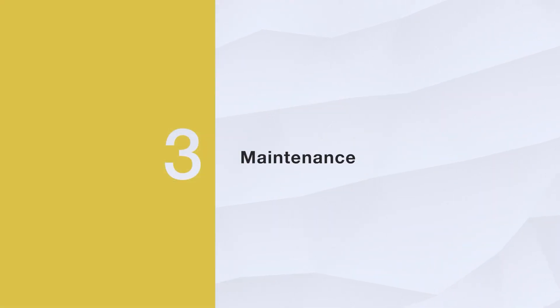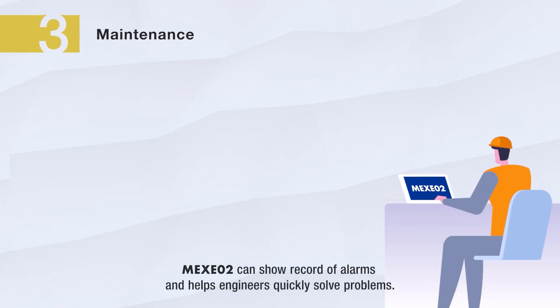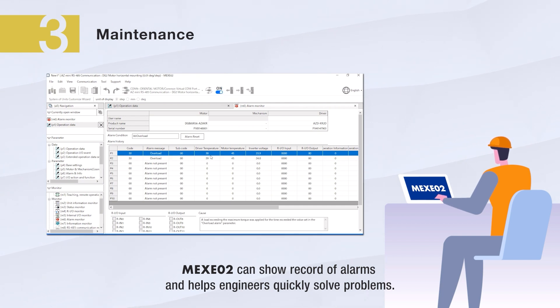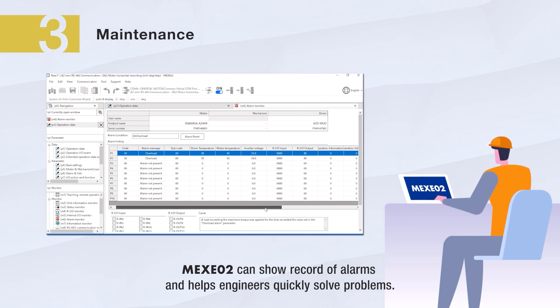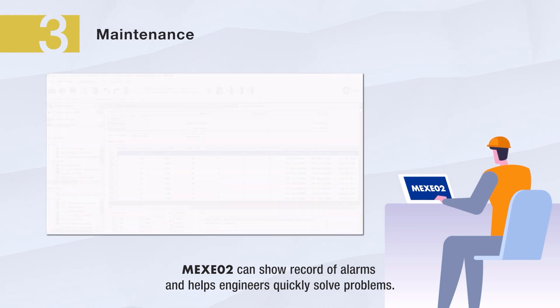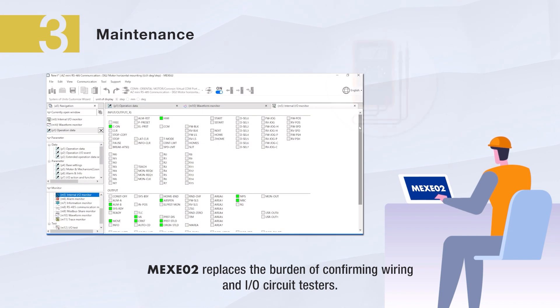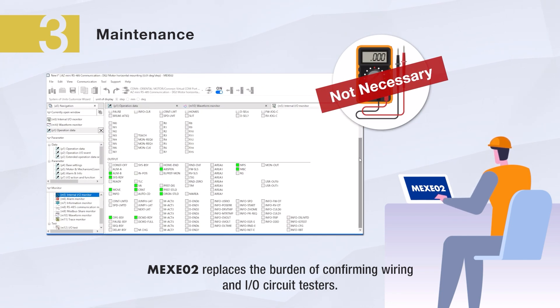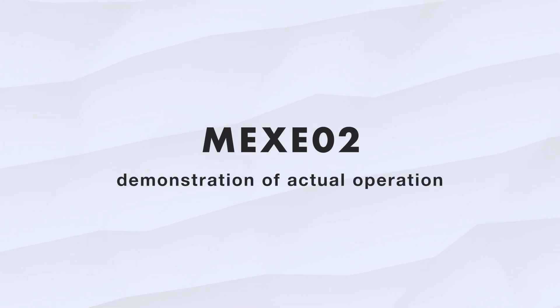Use the MEXE-02 support software to help troubleshoot problems in the field or check on motor performance, temperature, clear alarms, and many other maintenance functions. The MEXE-02 support software can also replace the need for continuity testing as the software can check the I/O status and more.